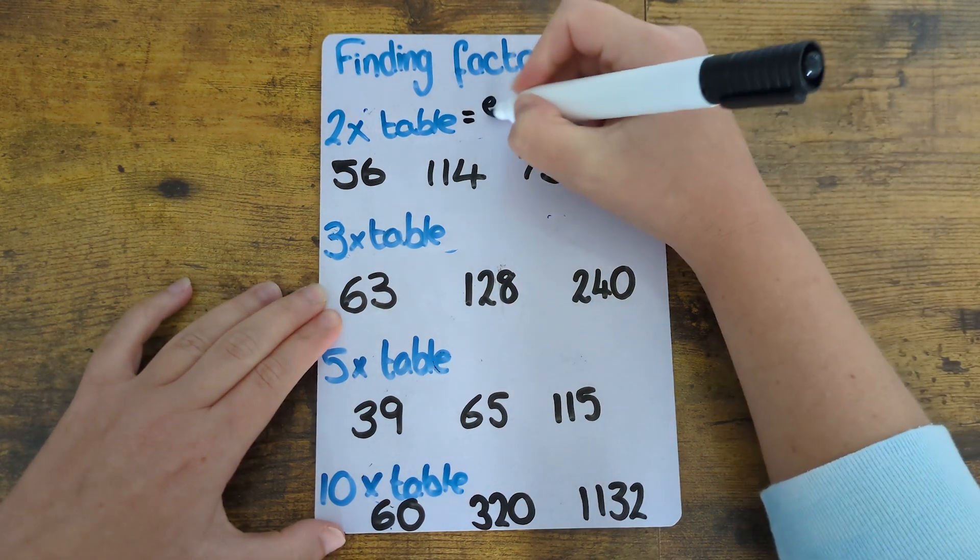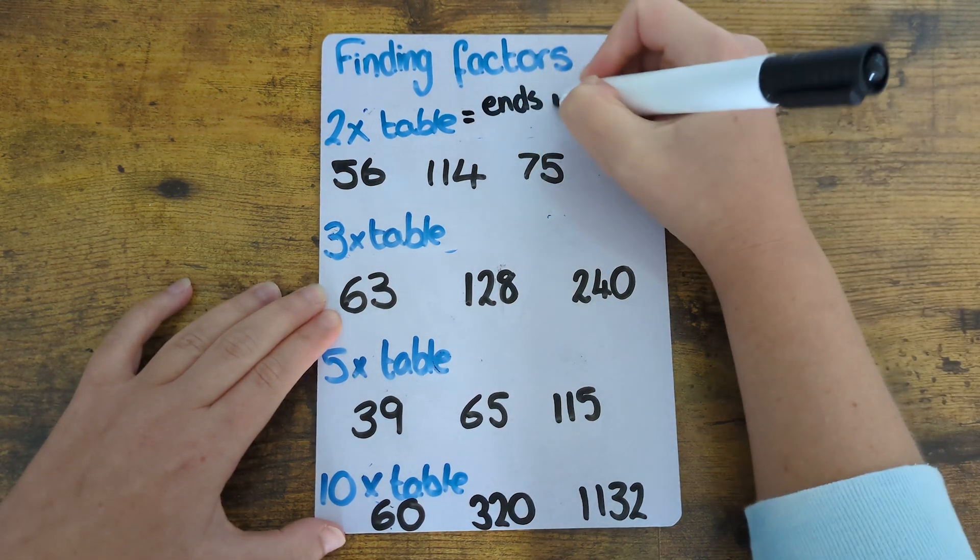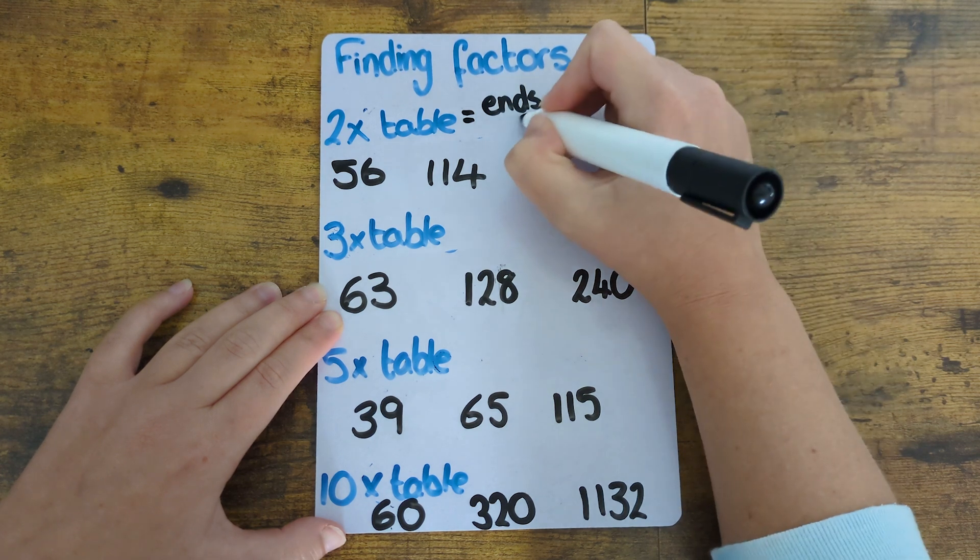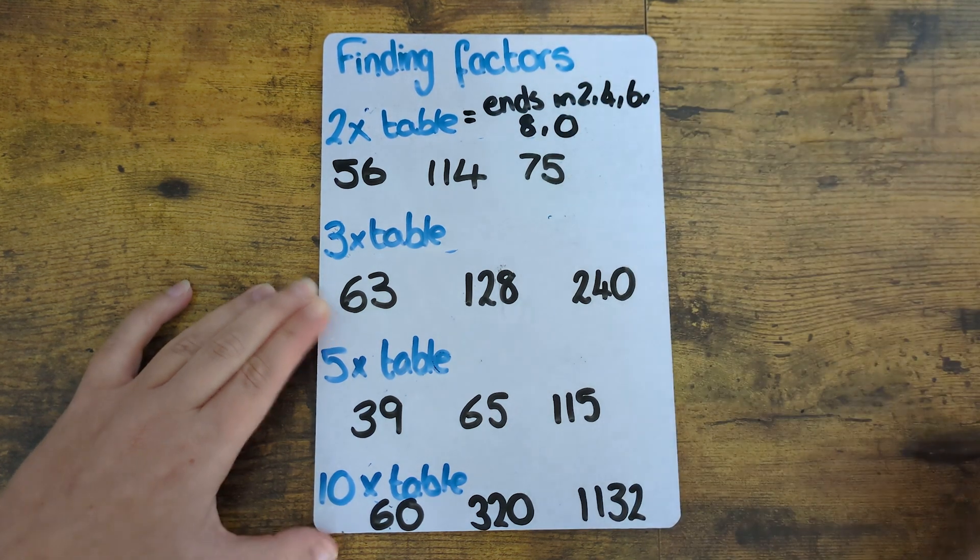So for the two times table the way to determine if a number is in the two times table is if it's an even number and so that it ends in two, four, six, eight or zero.